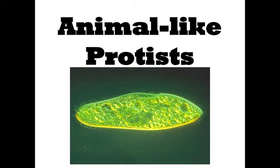Protists are often organized into three subgroups: animal-like, plant-like, and fungus-like. Animal-like protists are protists that display animal-like attributes as they breathe, move, and reproduce in a similar way to multicellular animals. Animal-like protists contain organisms such as the amoeba.